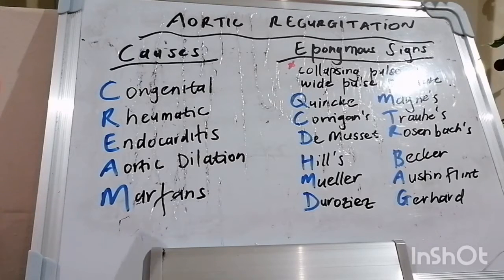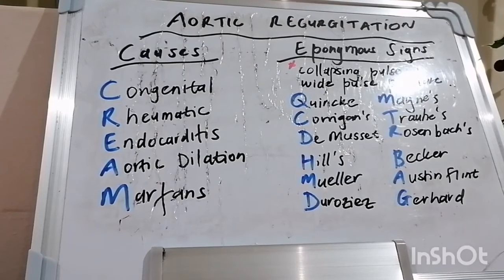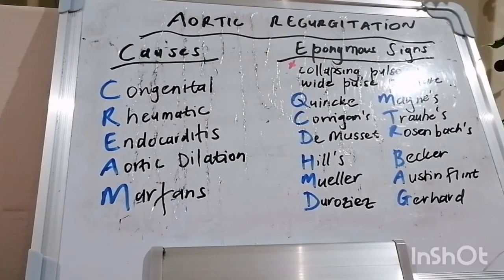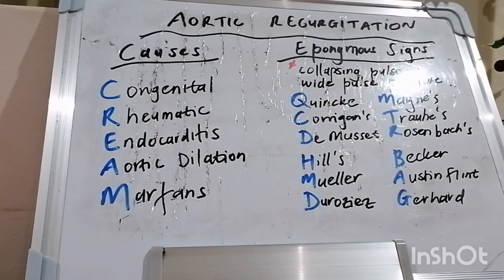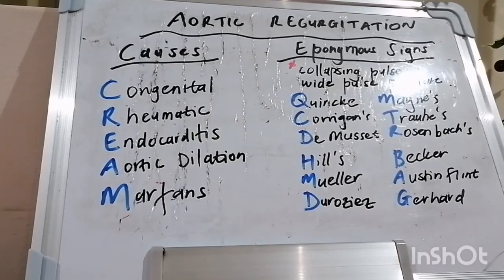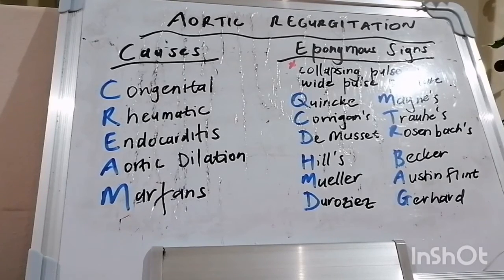In terms of valve abnormalities, we think about rheumatic heart disease, endocarditis, SLE, calcification, congenital causes like bicuspid valve, flailed leaflet, or osteogenesis imperfecta, and drugs like fenfluramine and other anorexogenic drugs. Causes related to aortic root dilatation include aortic dissection, ankylosing spondylitis, syphilis, Marfan's, Ehlers-Danlos, hypertension, bicuspid aortic valve, and cystic medial necrosis.